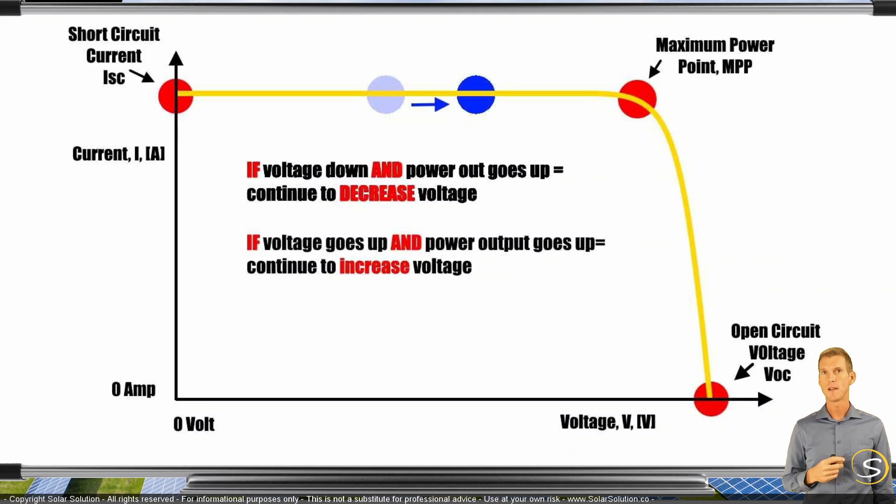It will just follow the IV curve, which is then a new type of IV curve, until it has found the sweet spot again, the maximum power point. And thereby assuring you that it will always get the maximum power output from the panel. It will adjust really rapidly to changing conditions.